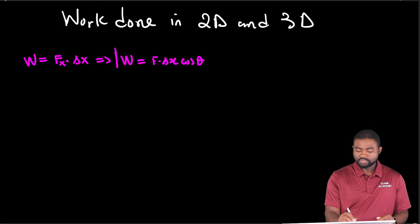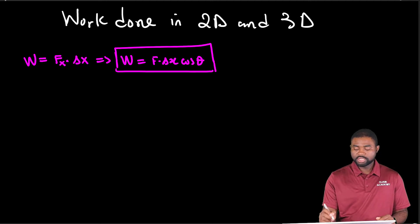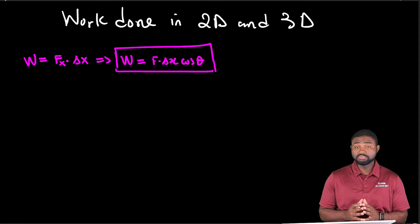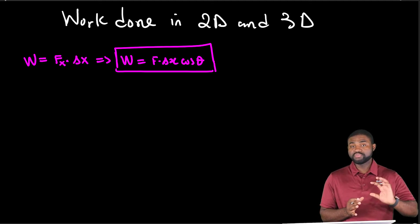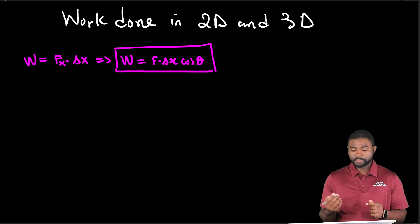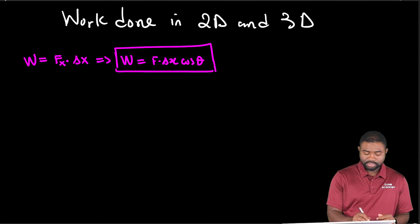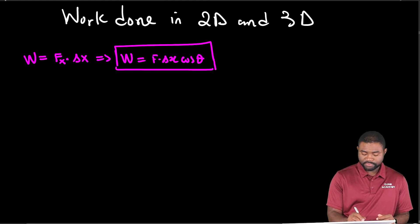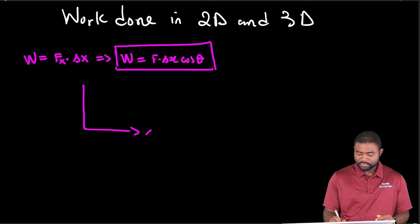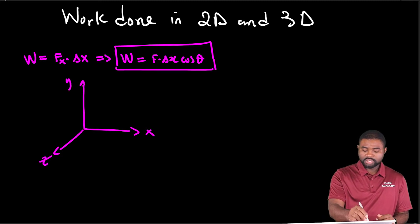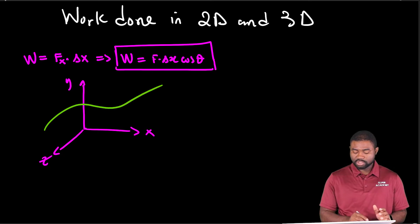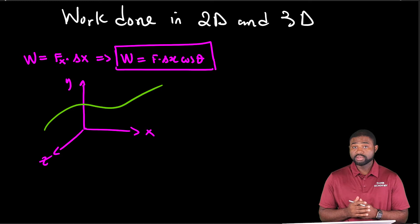But it is not in all circumstances that you will meet a force that causes an object to move in one dimension. Sometimes the very action of a force will cause an object to move along a plane. For example, with a coordinate axis where this is the x, this is the z, and this is the y — the particle moves along a plane. So how do we in this particular case calculate the work done on this particle?